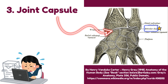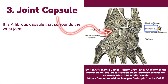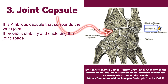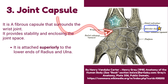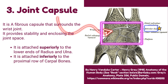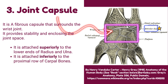Number 3: Joint capsule of the wrist joint. It is a fibrous capsule that surrounds the wrist joint, providing stability and enclosing the joint space. It is attached superiorly to the lower ends of the radius and ulna, and inferiorly to the proximal row of carpal bones.